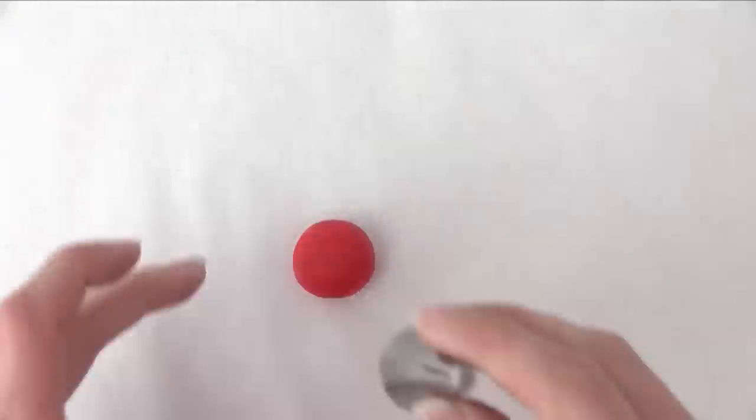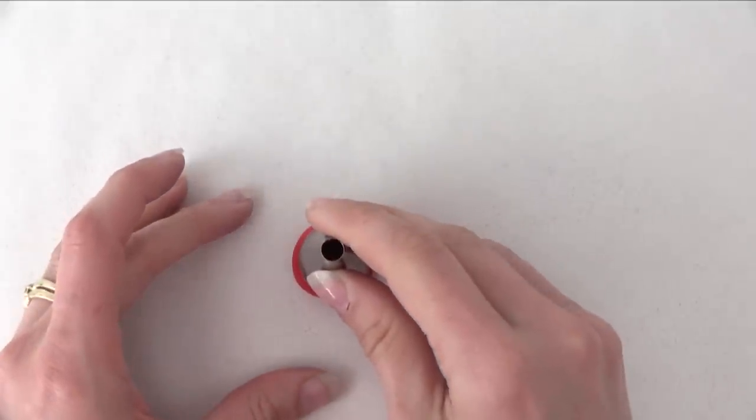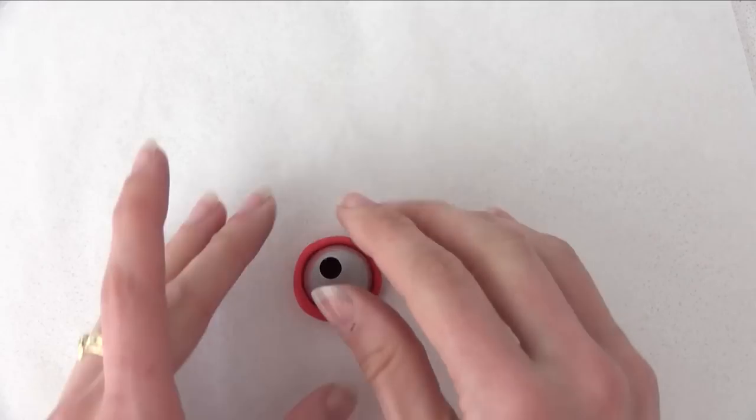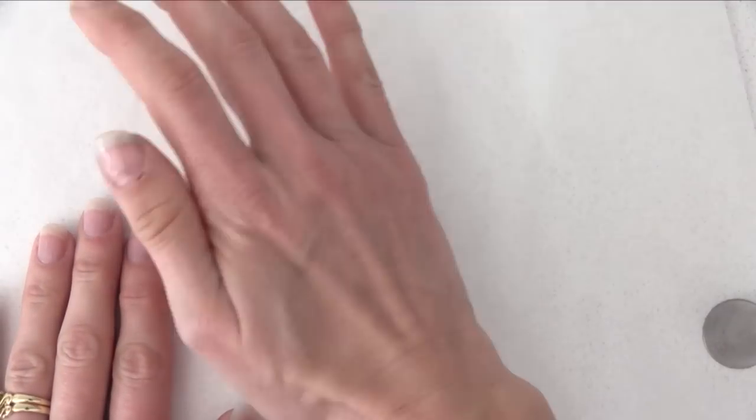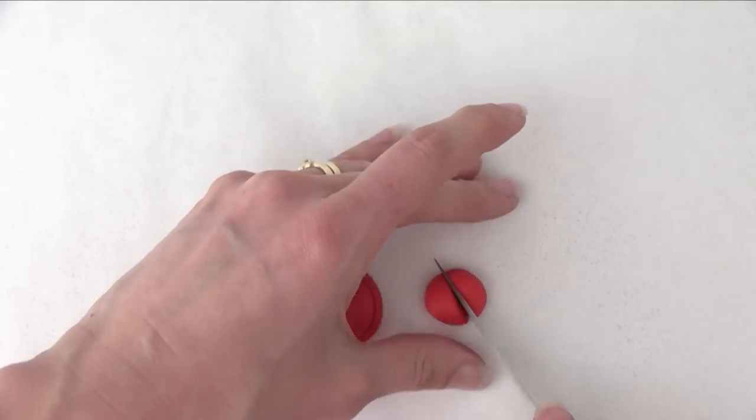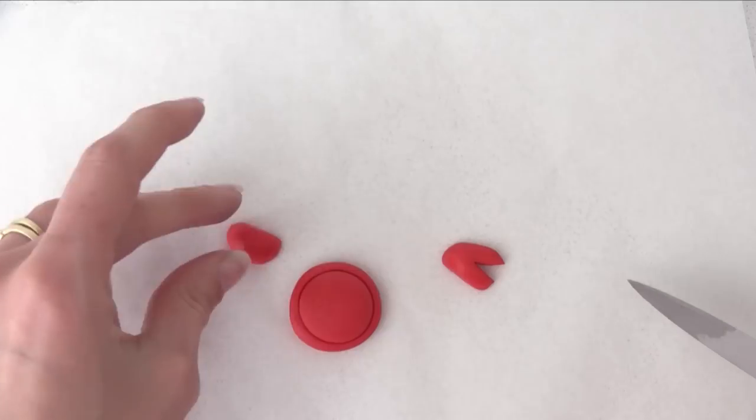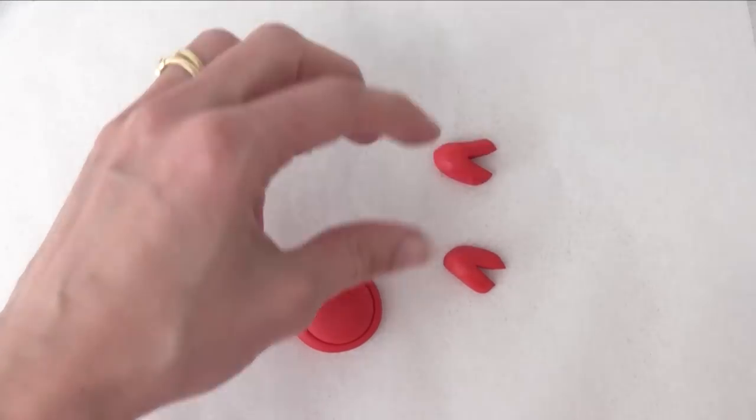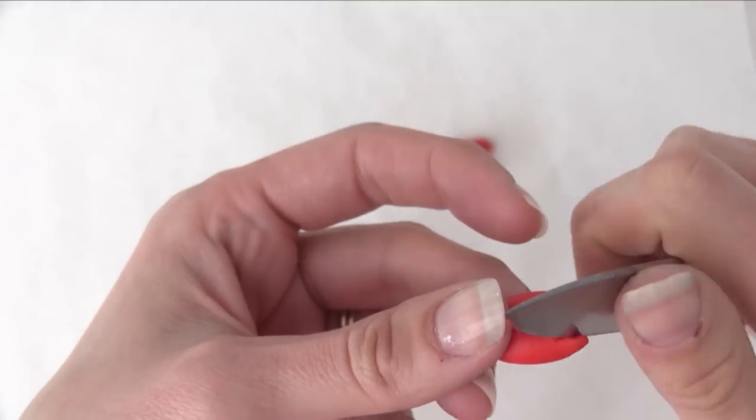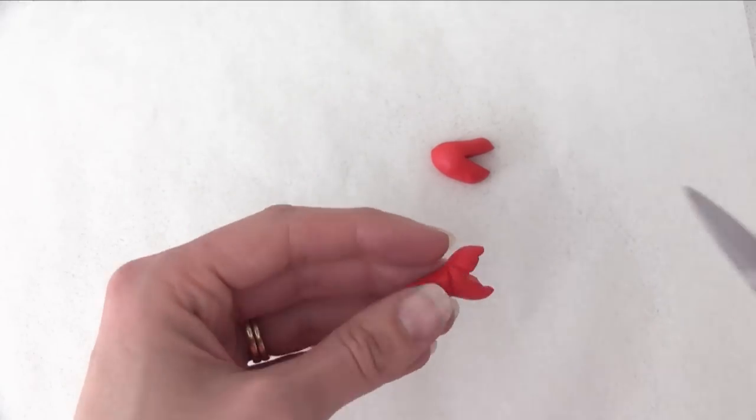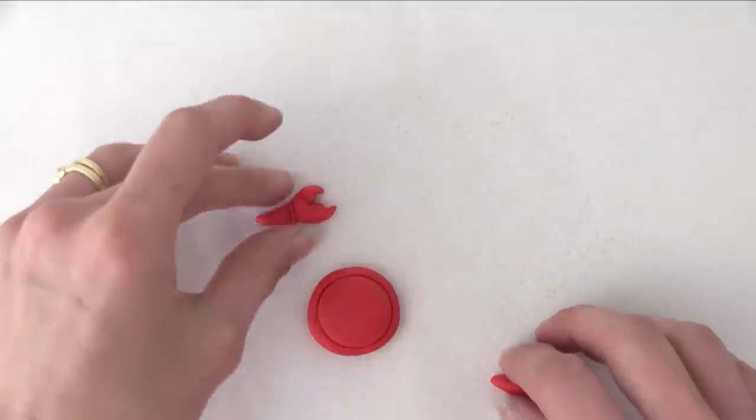To make Sebastian the crab, roll a ball and use the end of a piping tip to make a circle indent near the edge. Use the palm of your hand to squash it down slightly so it's flatter. Take a little ball of fondant and cut it in half. Make a slit in each one and use your knife to bend over the ends to make it look like a little claw. Run your knife around the wrist part to make two lines.